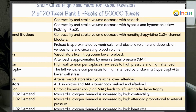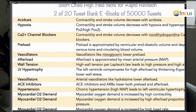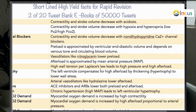Calcium channel blockers come in two types. Dihydropyridine types include nifedipine, nicardipine, nimodipine, and amlodipine. Non-dihydropyridine types include diltiazem and verapamil. Non-dihydropyridine calcium channel blockers like verapamil and diltiazem also decrease contractility and decrease stroke volume.